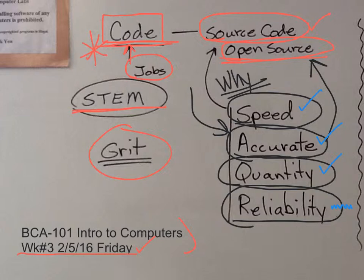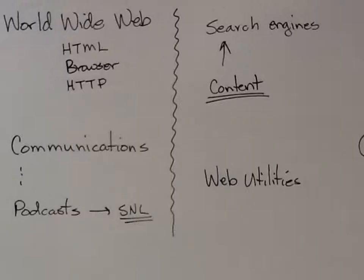Computers in the old days weren't nearly as reliable as they are now. In the outline there's some information dealing with speed and quantity.